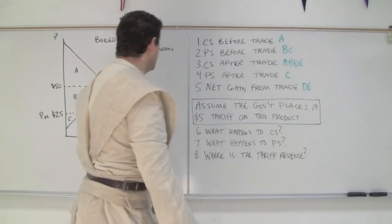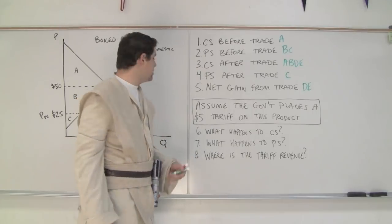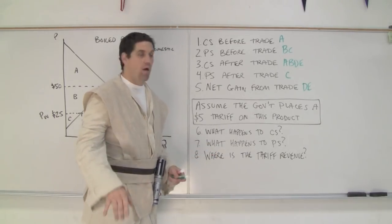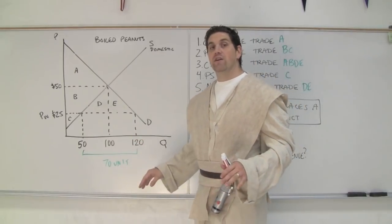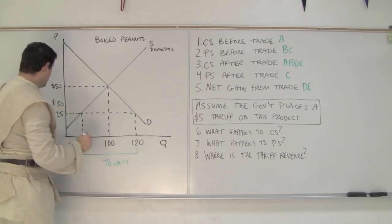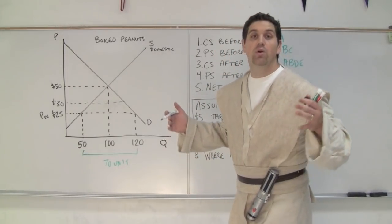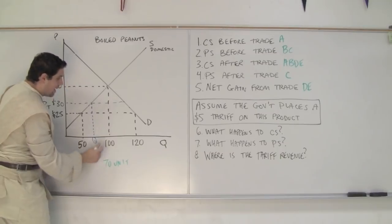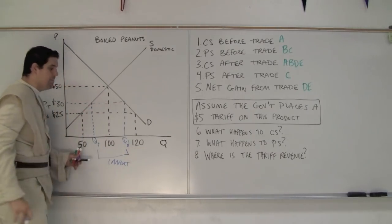Now we're going to move on to the part with the tariff. Let's assume the government places a $5 tariff on this product. Producers lobby the government and say, '$25 is way too cheap — you're killing domestic producers. Put a $5 tariff on it.' So instead of the world price being $25, it's going to be $30 because of the $5 tariff. The quantity supplied in our own country is going to shift, and the quantity demanded will be somewhere lower, so the amount we're going to import decreases to a smaller quantity.